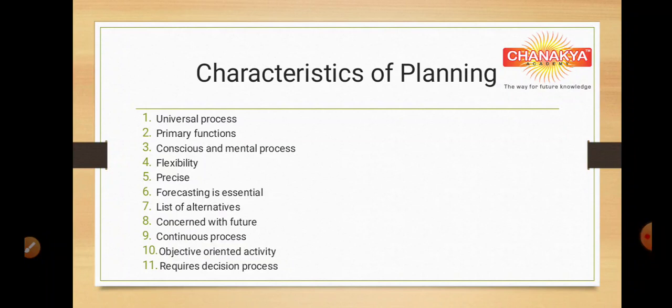Let us look at the characteristics of planning. Planning is a universal process — planning is present in every field like business, politics, education, religion, or even social. It is the primary function of management because all other functions — organizing, staffing, directing, and controlling — are based on planning. Management starts with planning, and all other functions are implemented on its basis.